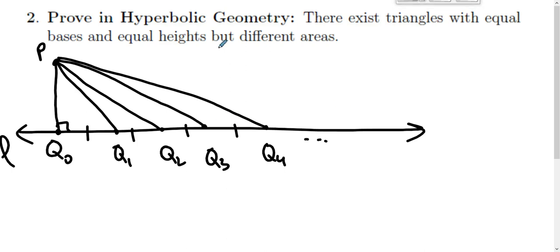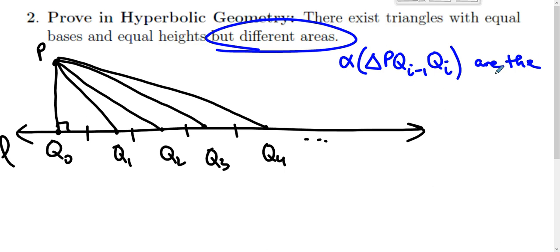So how do we run this? We run this as a proof by contradiction. We suppose that the area of triangle P, Q sub i minus one, Q sub i, that those areas are the same for all i. We just assume that each of these has the same area.